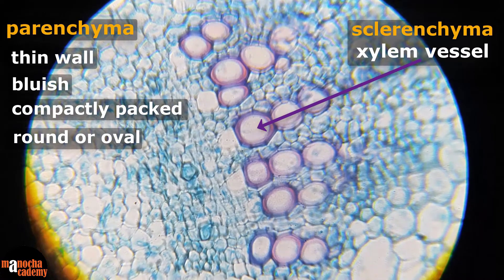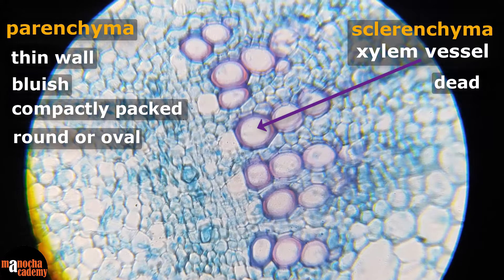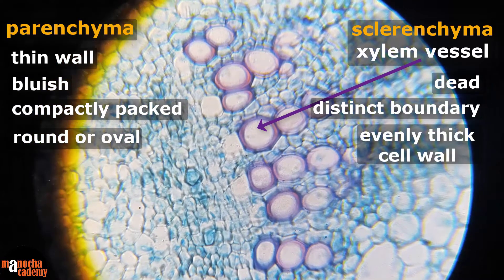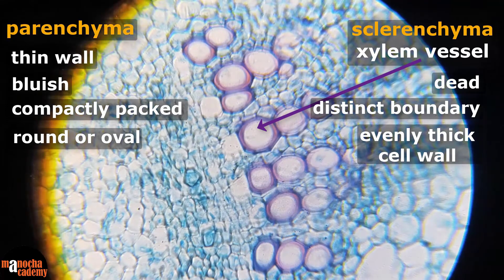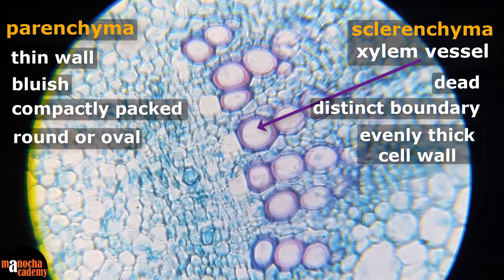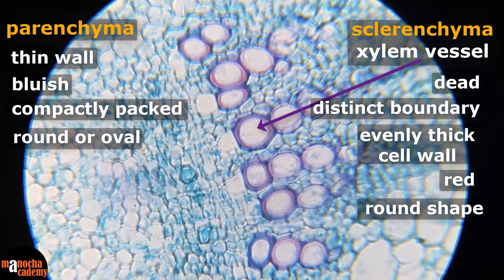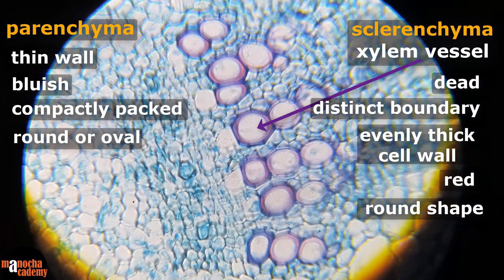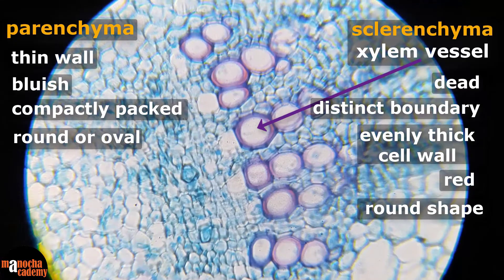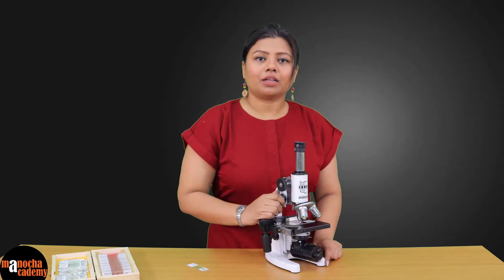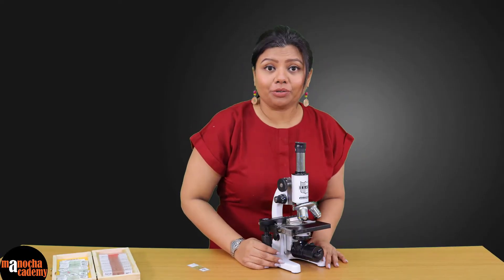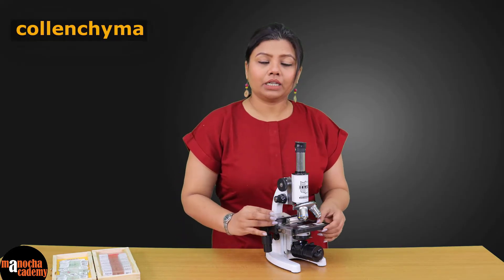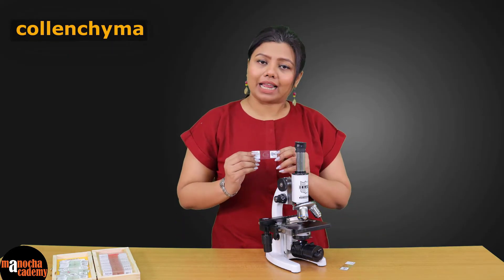Xylem vessels are dead and they have a cell wall which is evenly thickened. Here you will be able to see distinct red round regions, which are basically sclerenchyma cells with an evenly thickened cell wall. Now we move on to colenchyma; we have a prepared slide of colenchyma to focus under the compound microscope.